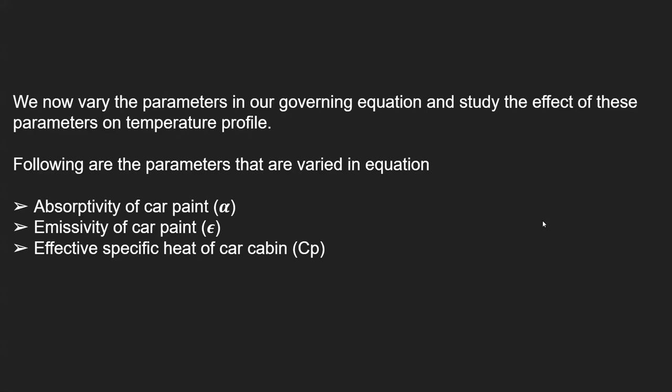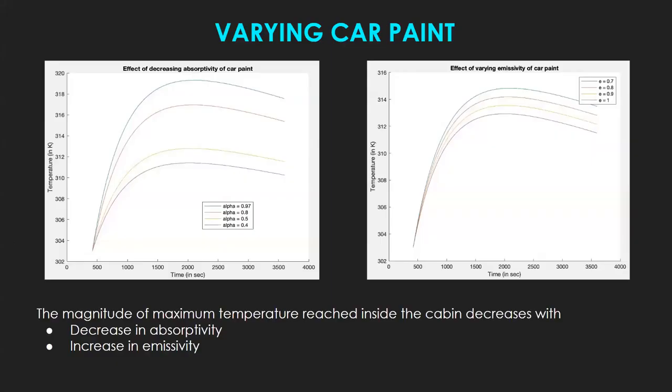Let's have a look at how different parameters influence the temperature profile inside the car cabin. Parameters are as follows. Absorptivity of car cabin, that is alpha. Emissivity of car cabin, that is epsilon. Effective specific heat of car cabin, that is C. Now, by looking at these graphs, we see that maximum temperature reached inside the car cabin decreases if the emissivity is increased. But it also decreases if the absorptivity is decreased.